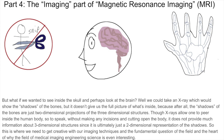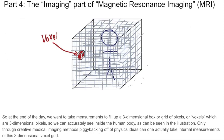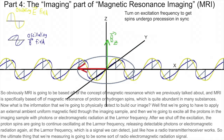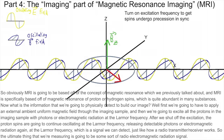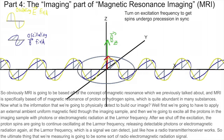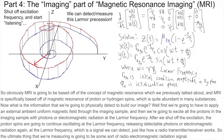So this is where we need to get creative with our imaging techniques — and this is the heart of why the field of medical imaging engineering science is even interesting. At the end of the day, we want to take measurements to fill up a three-dimensional box or grid of pixels, or voxels, which are three-dimensional pixels, so we can accurately see inside the human body and see the 3D structures. MRI is going to be based off of the concept of magnetic resonance of proton or hydrogen spins, which is quite abundant in many substances.